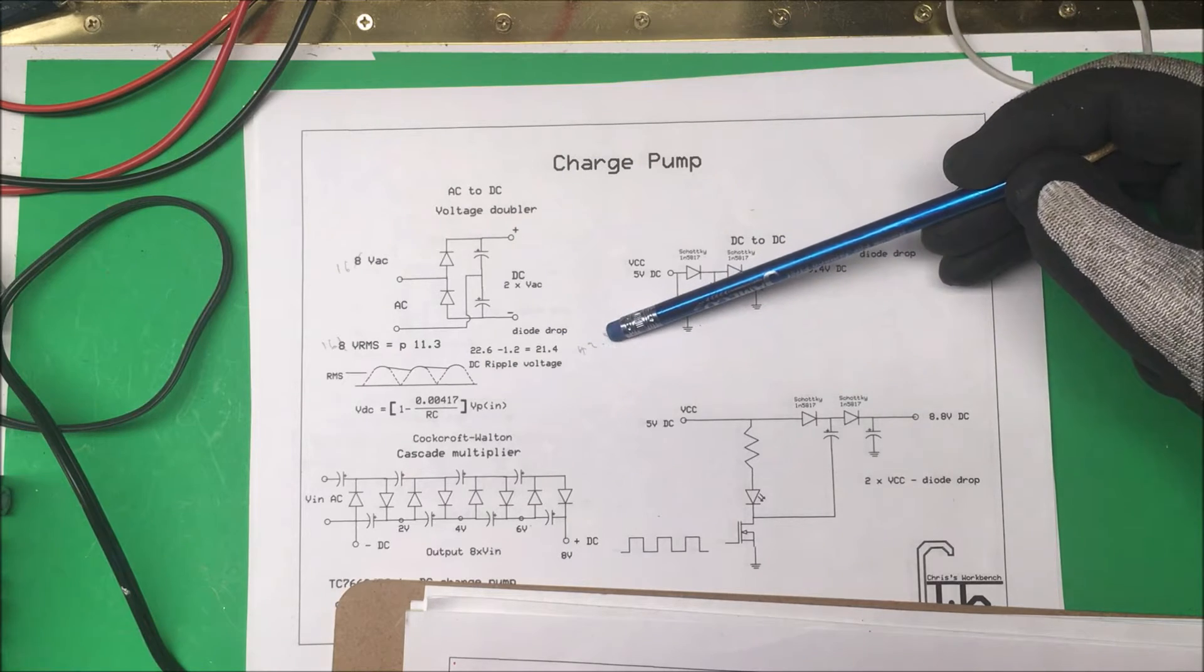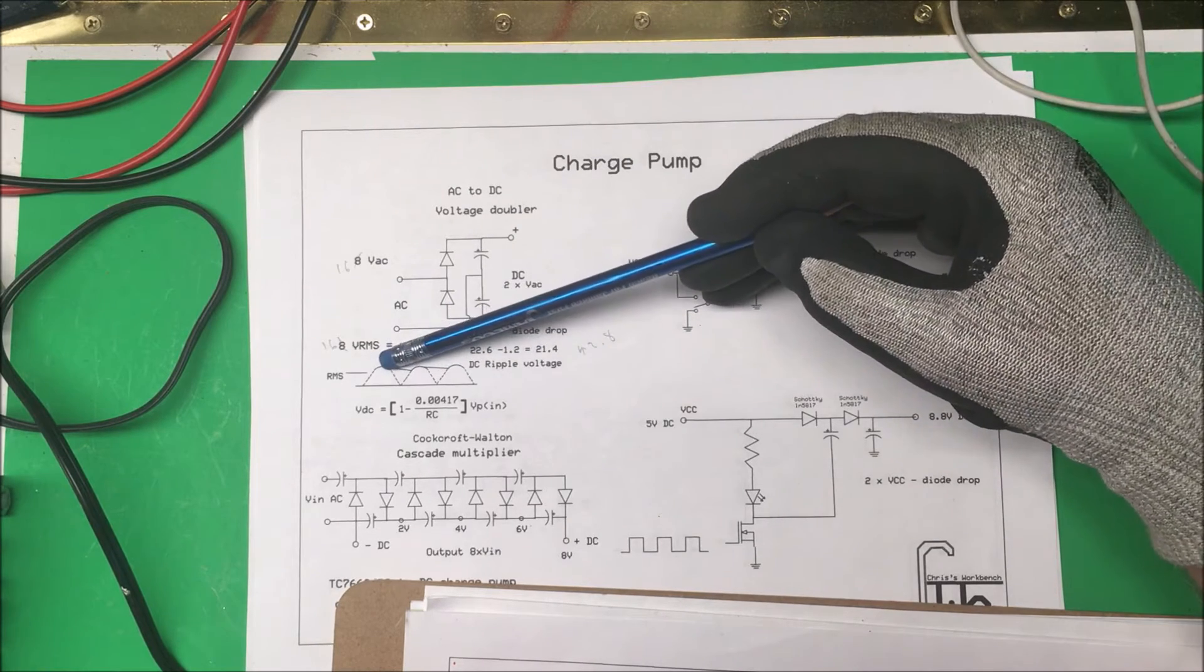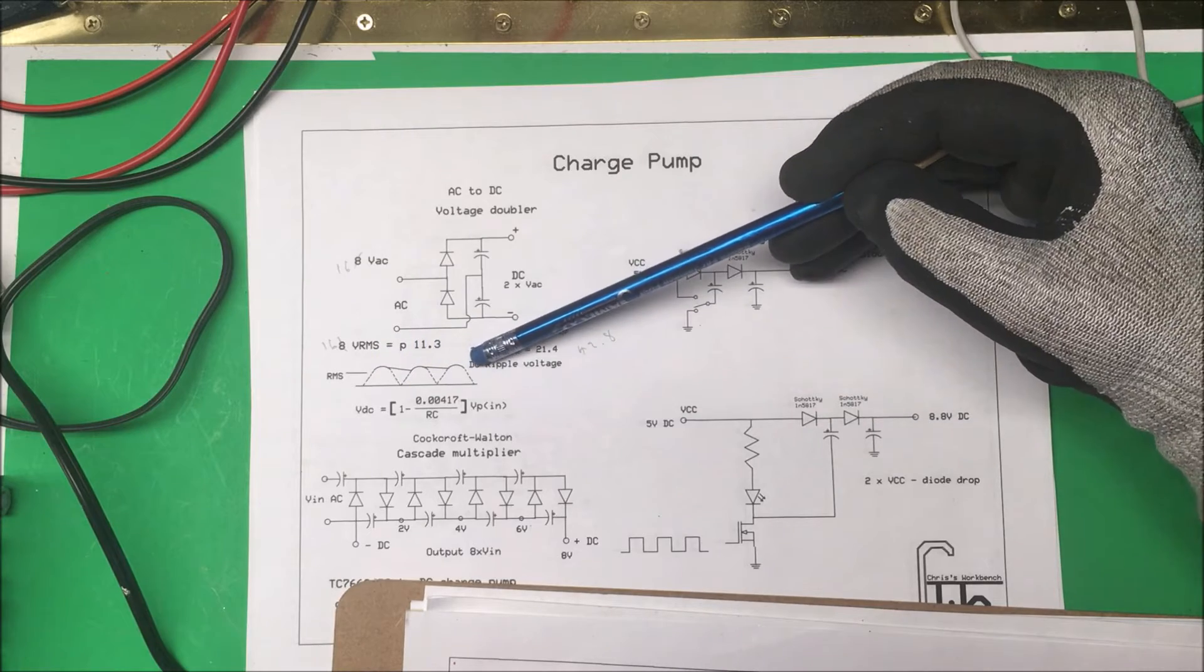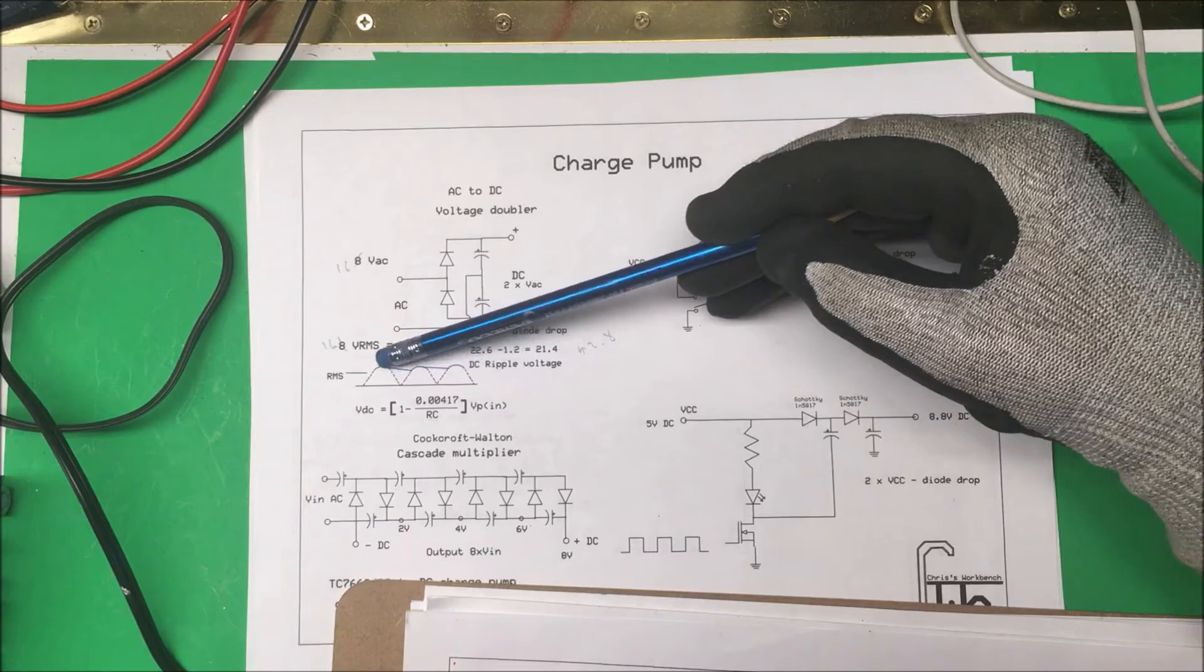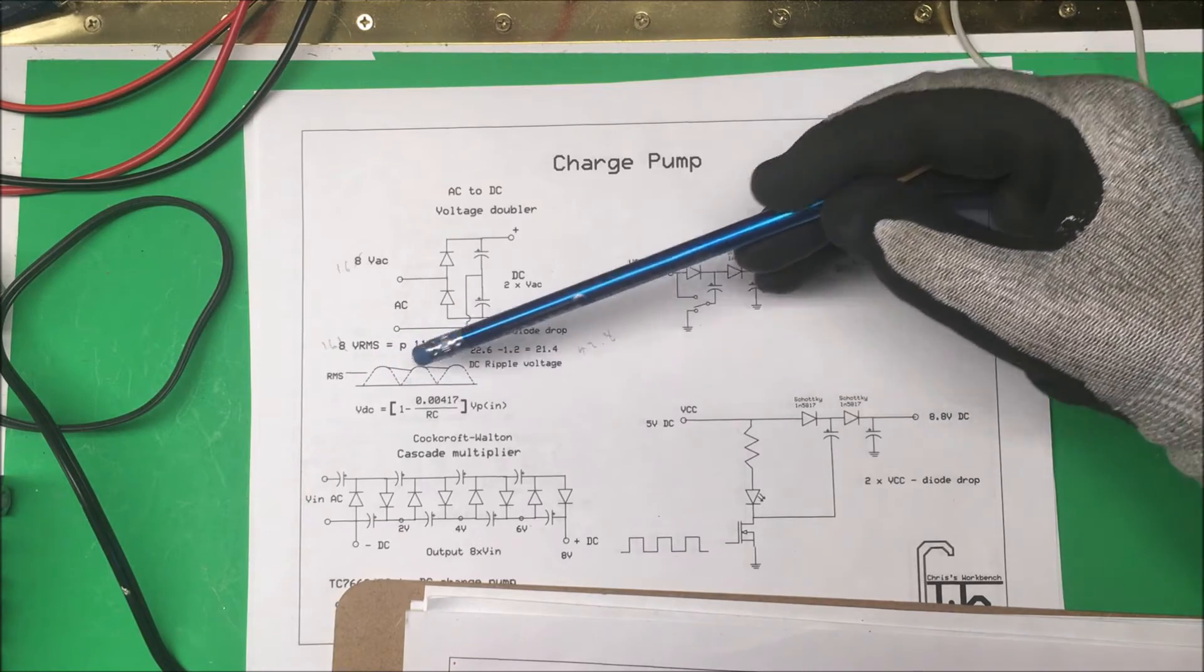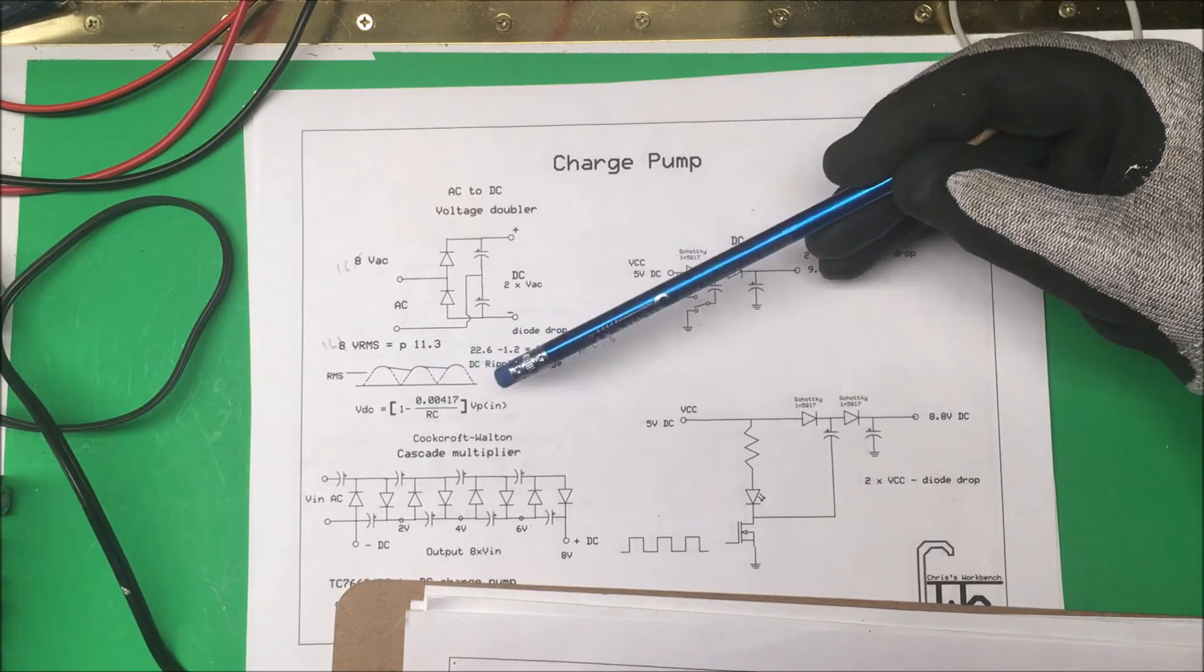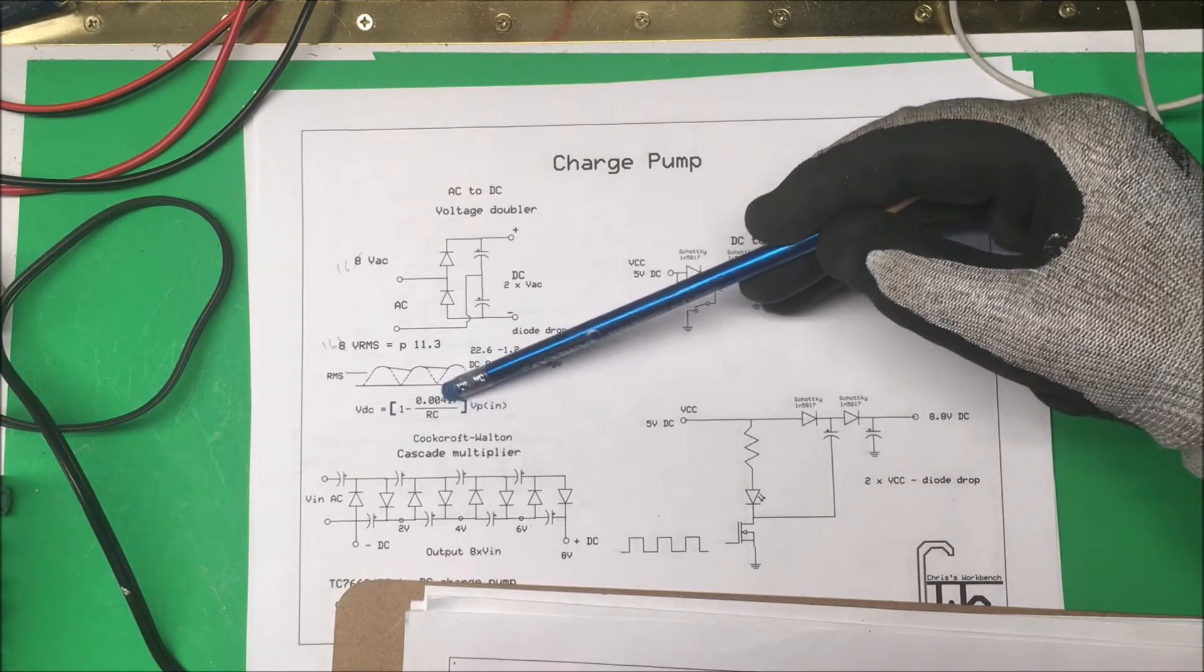Now we need to calculate the DC ripple voltage because these capacitors are trying to smooth this out, so we don't have the peak value anymore. There's a formula to calculate that, maybe we'll go into that in a different video.